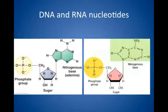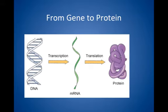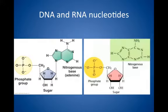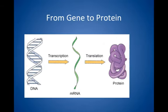We talked a lot about the monomers that make up these nucleotides — the monomers that make up the polymers of DNA and RNA. We talked about how DNA and RNA differ. These monomers are called nucleotides, which build upon one another to form the polymers of DNA and RNA. We talked about their functions and differences.